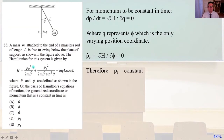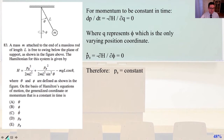Problem 83: a mass m attached to the end of a massless rod of length l is free to swing below the plane of support, as shown in the figure above. The Hamiltonian for this system is given by the equation shown, where theta and phi are defined as shown in the figure. On the basis of Hamilton's equations of motion, the generalized coordinate or momentum that is constant in time is?